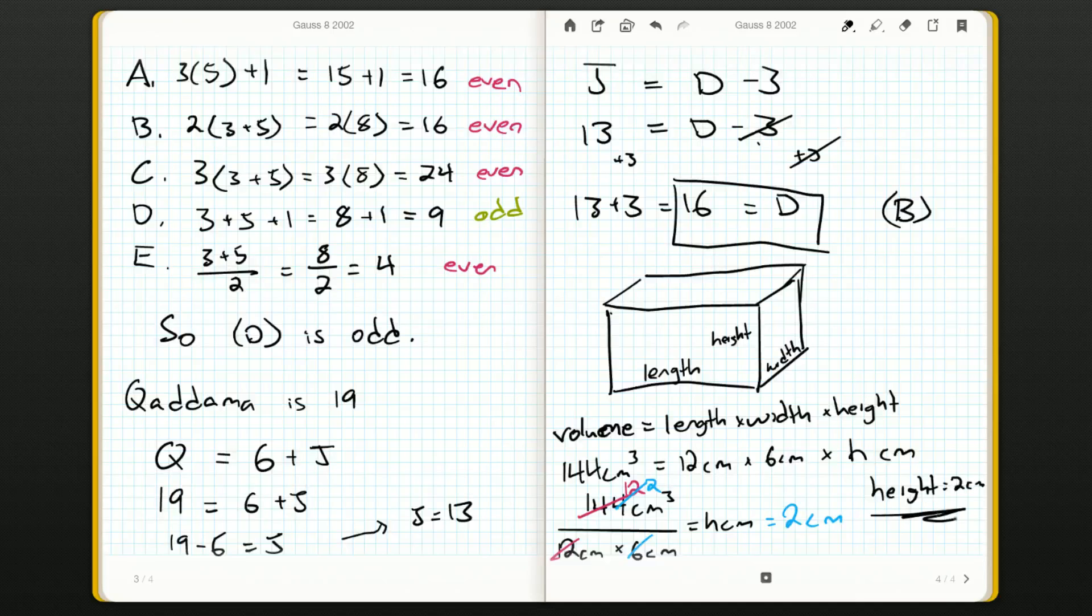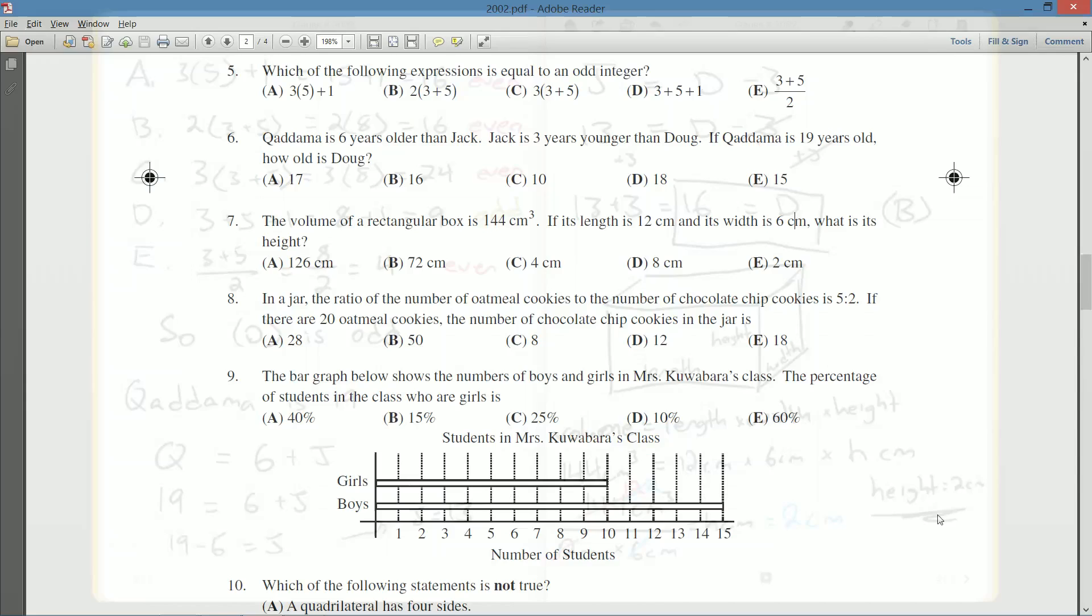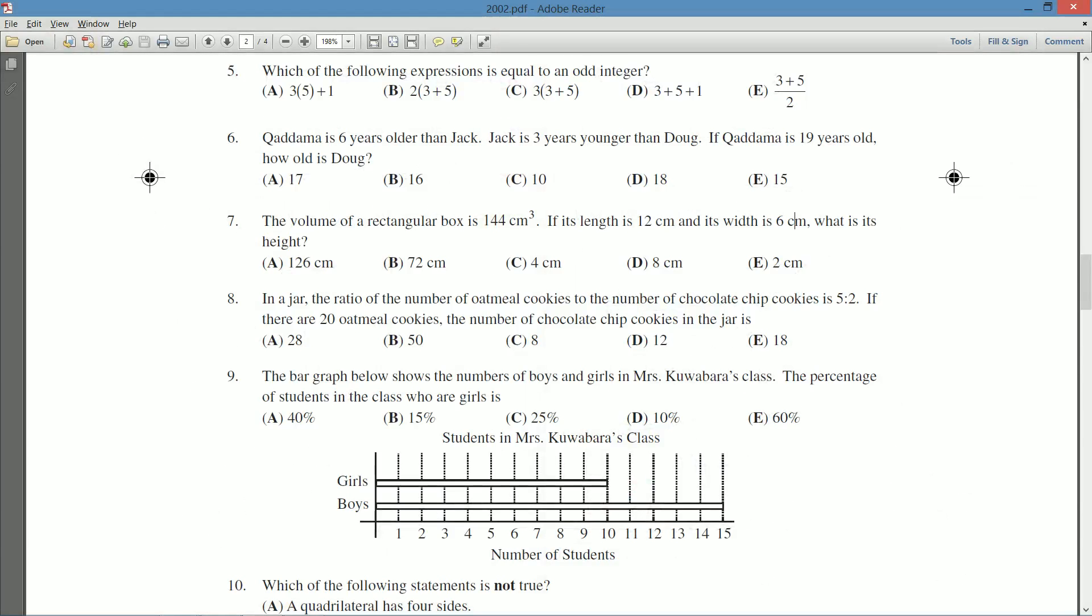So my height is 2 centimeters. And let's see, was that one of the possible answers? Yes it was. It's E at the very end there.